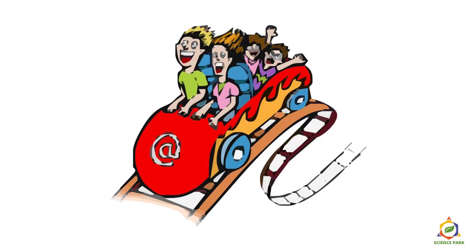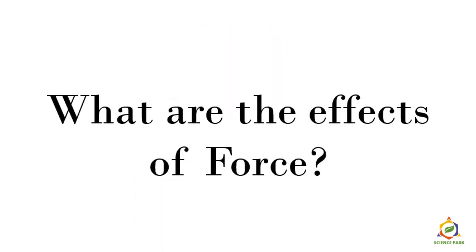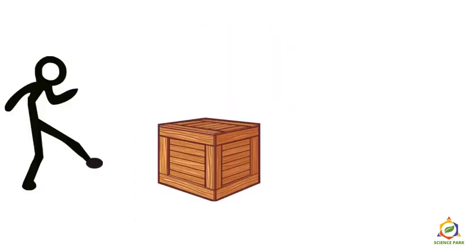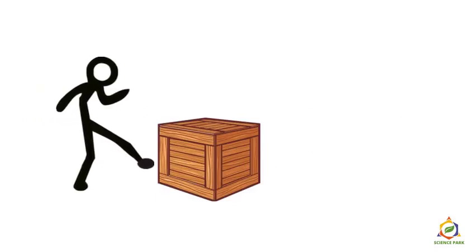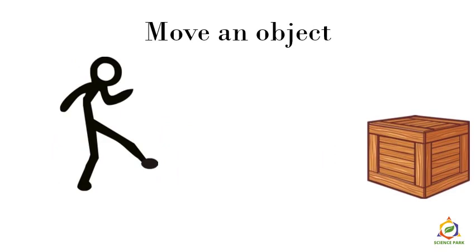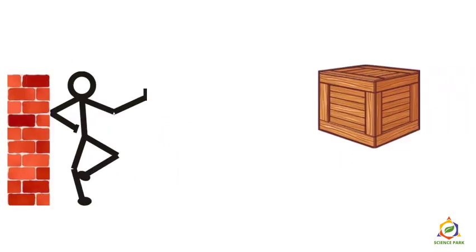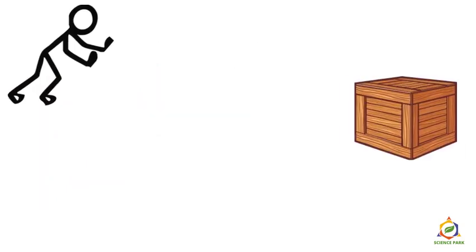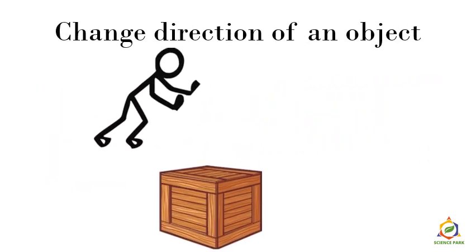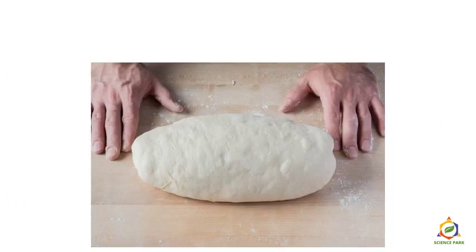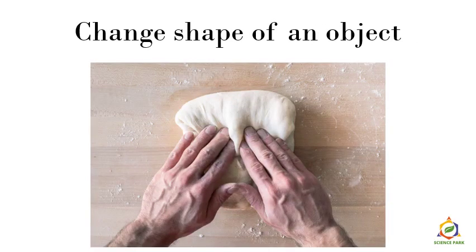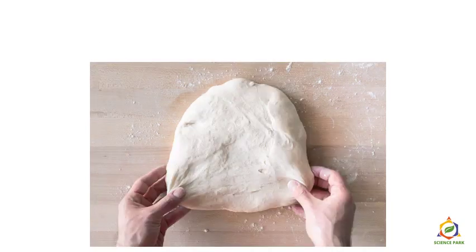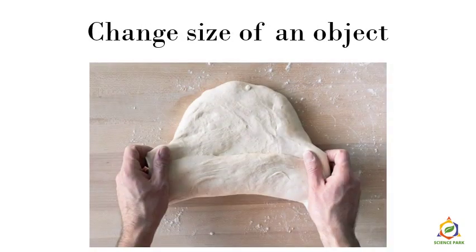Now let's see what happens when we apply force — the effects of force. The first effect is that we can move an object. The next effect is we can stop a moving object. We can change the direction of an object. By applying force, we can also change the shape of an object, and also the size of an object. So these are the effects of force.